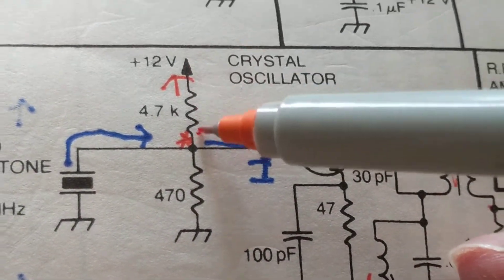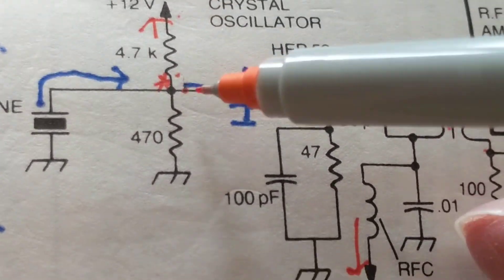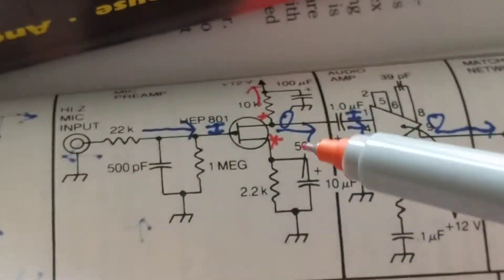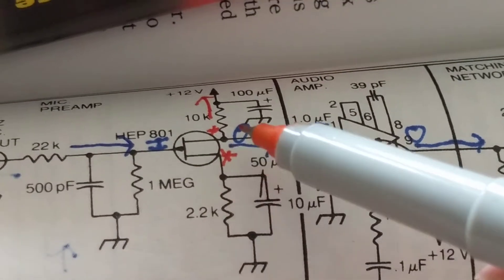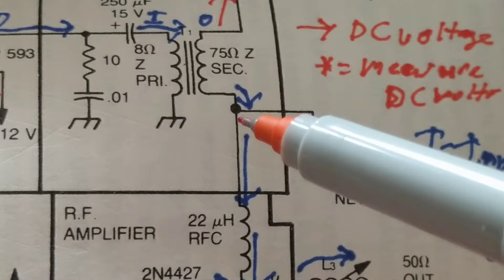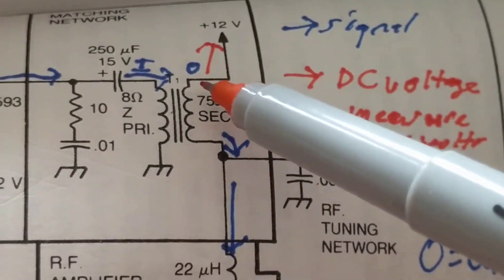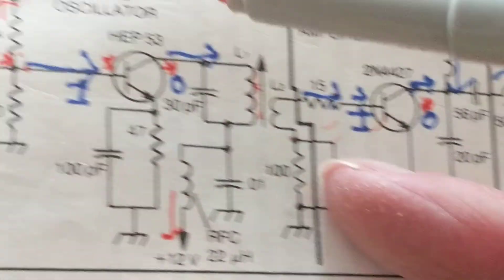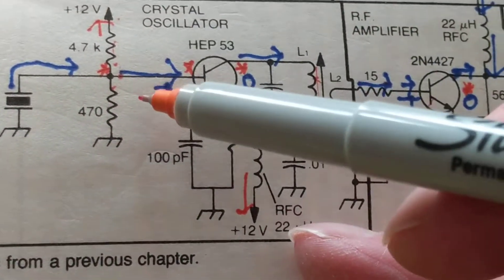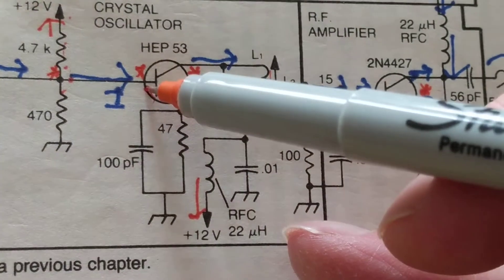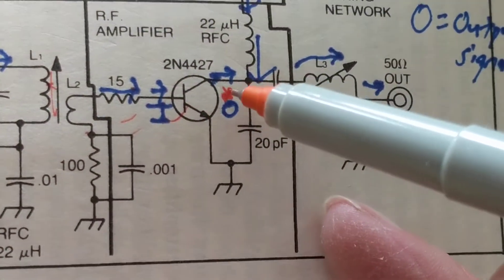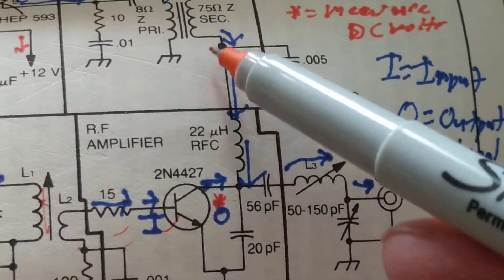So again here, DC 12 volts. Follow the orange. If you want to measure the DC voltage, I've made a star to show you. A star here, a star here means I can measure DC volts. Here I can measure DC volts to make sure 12 volts is coming in. Here I can measure 12 volts. Here I can measure 12 volts. This is a voltage divider. I can measure DC volts here, I can measure DC volts here. I can measure DC volts over here coming from the 12 volts.